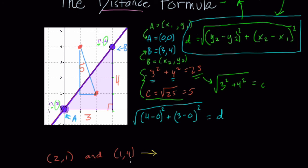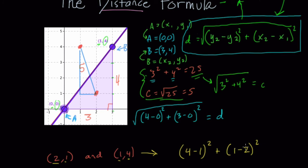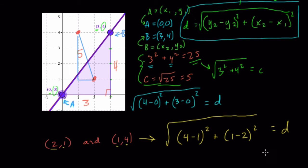We subtract the two y values: 4 minus 1, and square it. Then we add the difference of our x values: 1 minus 2, and square it. The order doesn't matter because you're squaring — reversing gives an inverse, but squaring gives the same result. So 4 minus 1 is 3 squared, which is 9. 1 minus 2 is negative 1, squared is 1. So 9 plus 1 is 10. D equals the square root of 10. The square root of 10 can't be broken down, but when you get square roots that can be, do so.